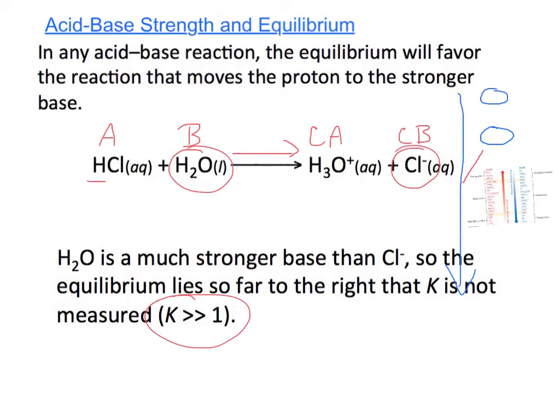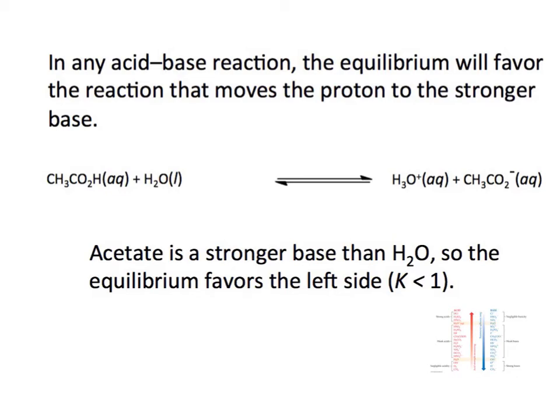If you think about your equilibrium expression, since equilibrium lies so far to the right with your products, K is going to be much greater than 1, and that's going to have some value for us later on. So please remember that. And lastly, if we do this with a weak acid, it would be somewhat similar but not as extreme.